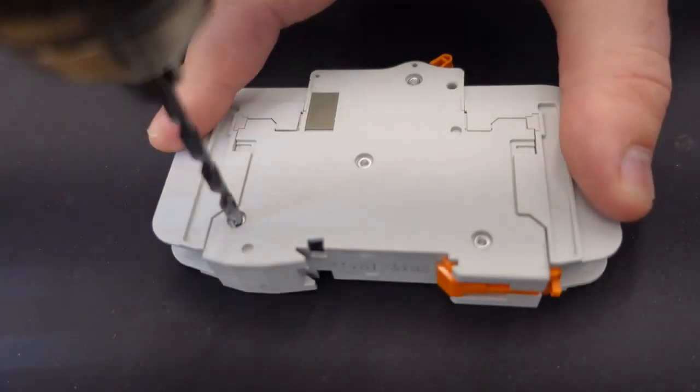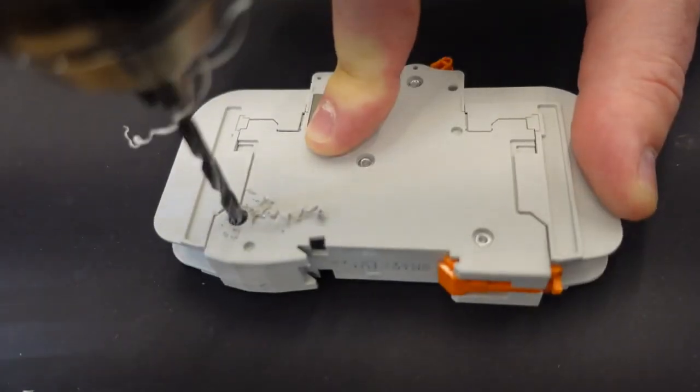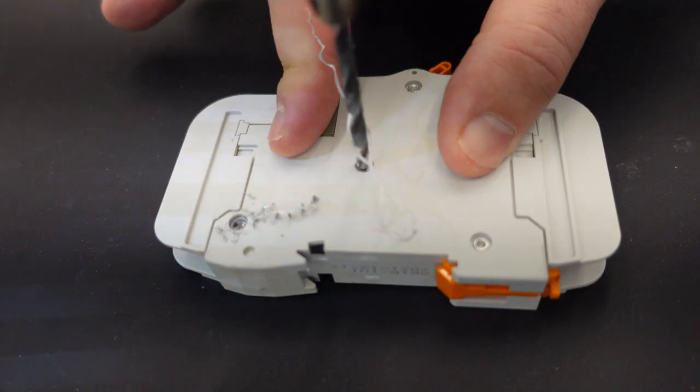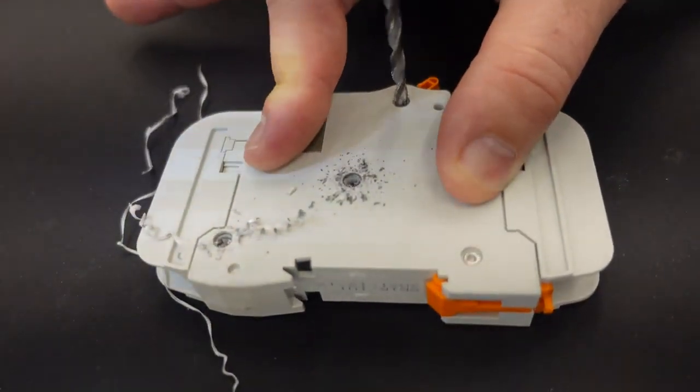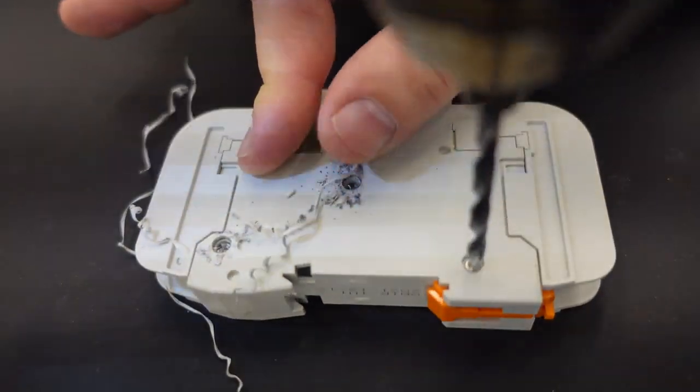Do you know how to open a breaker? You gotta drill out the rivets. Because it's not screws, they're rivets. So really there's four? One, two, three, four. Core pocket, here we go.